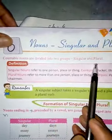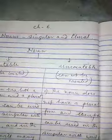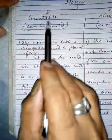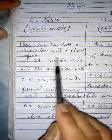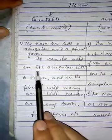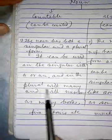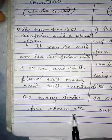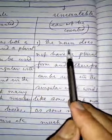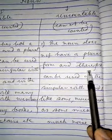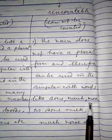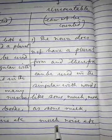Now, it is given in the book: countable nouns are divided into two groups — singular and plural number. The noun has both a singular and a plural form. It can be used in the singular with 'a' or 'an', and in the plural with 'many' and with numbers, as 'many books', 'five chairs', etc. But in case of uncountable nouns, the noun does not have a plural form, and therefore can be used in the singular with words like 'some', 'much', 'more', as 'some milk', 'much noise', etc.